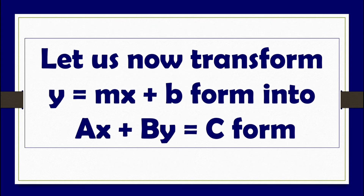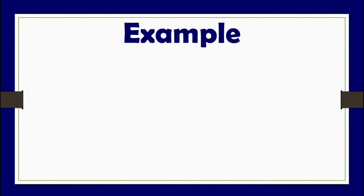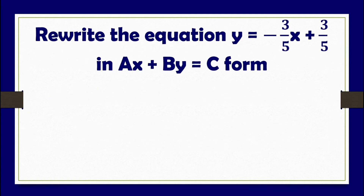Let us now do the reverse — transforming the slope-intercept form into ax plus by equals c form. First example: rewrite the equation y equals negative three-fifths x plus three-fifths in ax plus by equals c form.